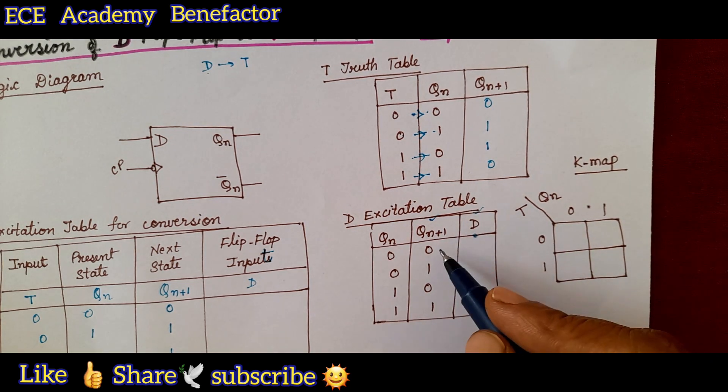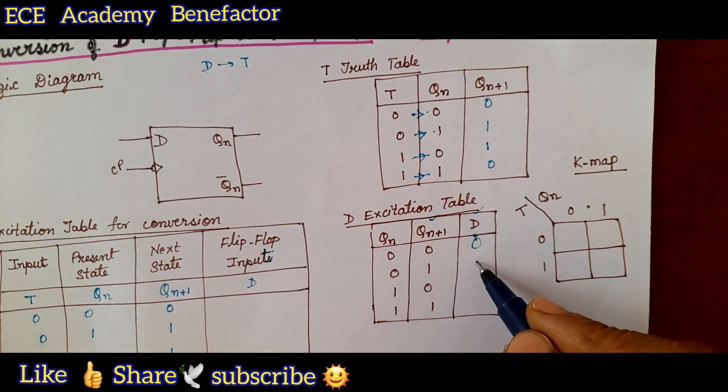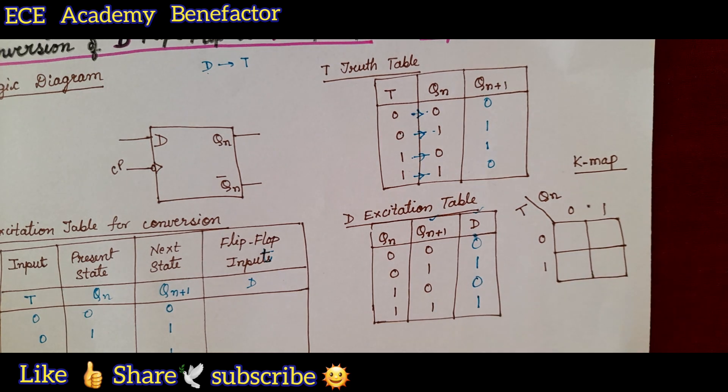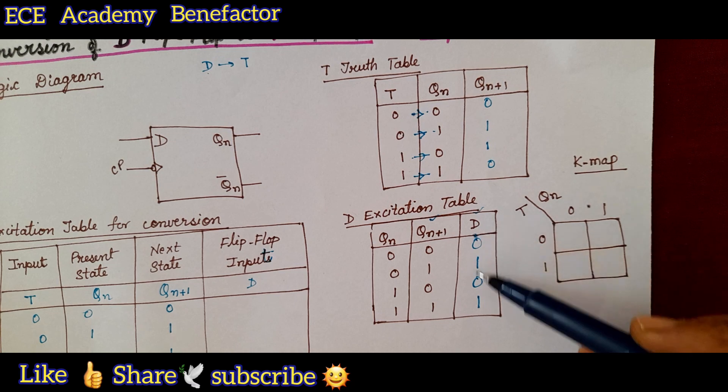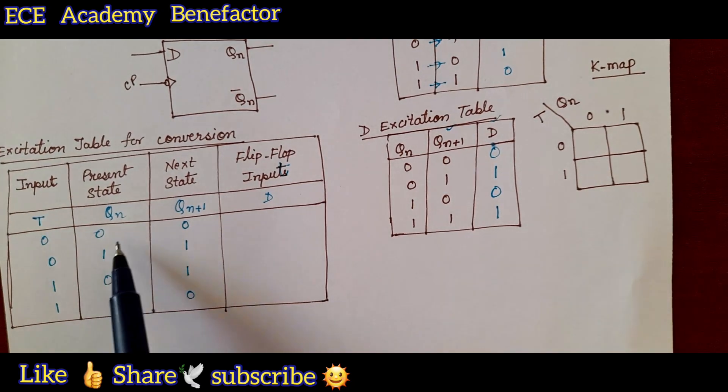Whatever is Q n plus 1 the same will be for D as you know. D means delay, just the delay is there. For 0 it will appear as 0 1 1 0 and this one will appear here. Whatever is Q n plus 1 the D is the same. We can write it here.